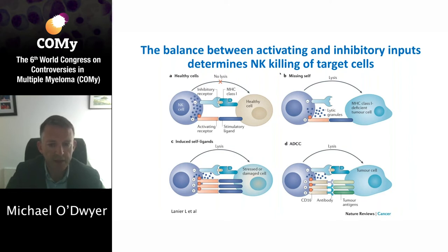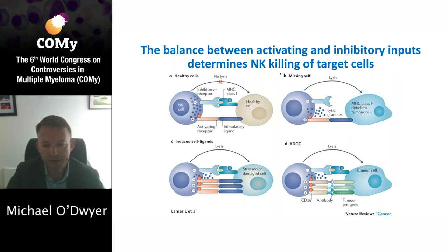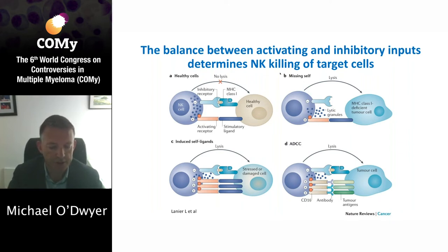In the bottom right, NK cells can also be strongly activated by engagement of FC gamma receptor 3A, which is also known as CD16, by the FC portion of antibodies when bound to a target cell antigen.